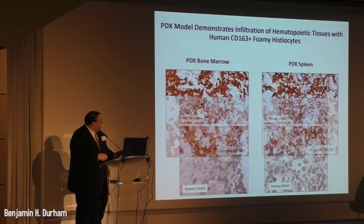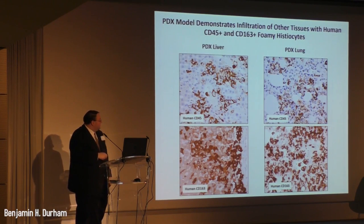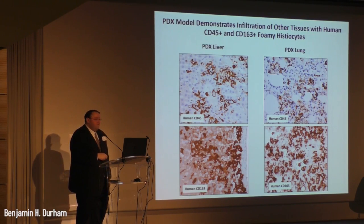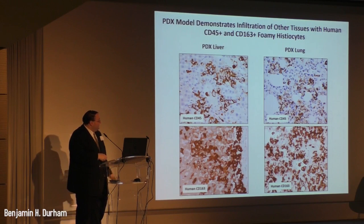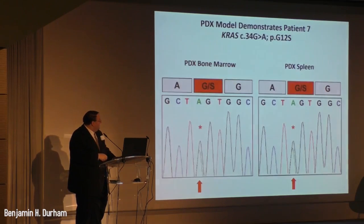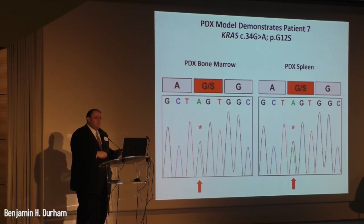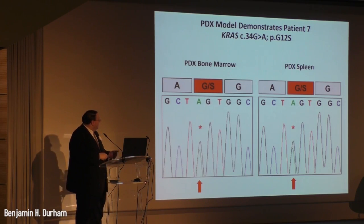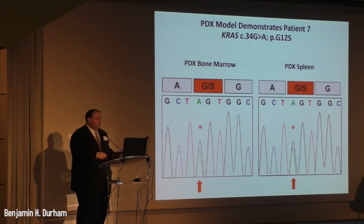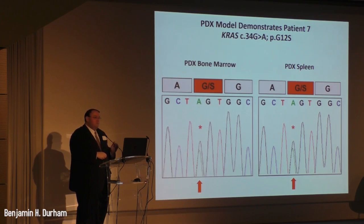In addition to hematopoietic tissues, we saw infiltration of the liver and lung by human CD45-positive and human CD163-positive foamy histiocytes. When we extracted DNA from the bone marrow and spleen of the xenograft generated from ECD Patient 7, we found the same KRAS G12S mutation in the bone marrow and spleen that was driving the patient's Erdheim-Chester disease.